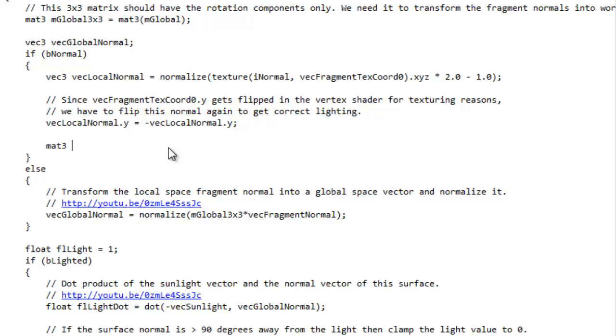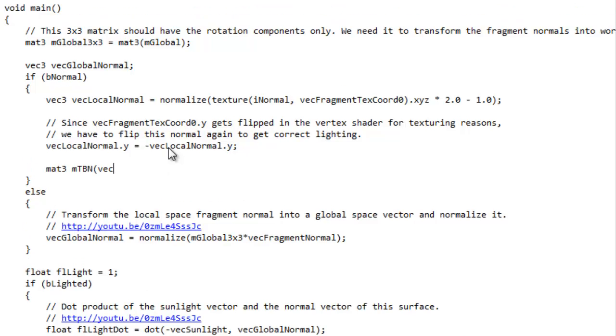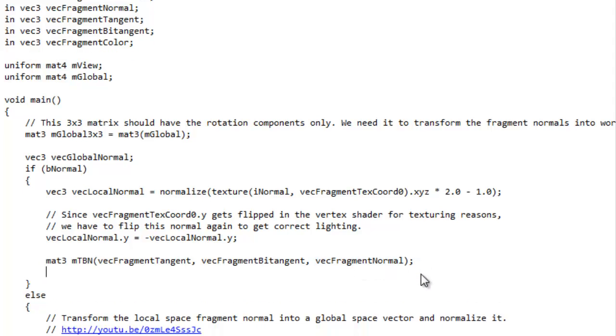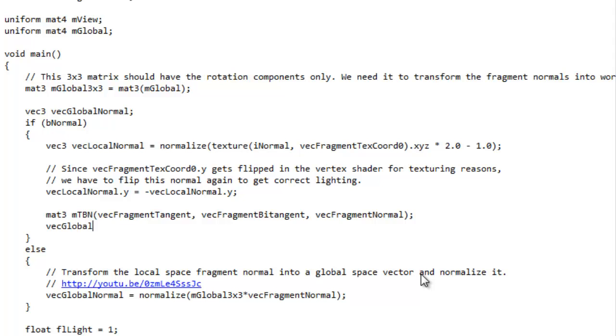So let's make a matrix. We're going to call it TBN, that is the tangent bi-tangent normal matrix. And we are going to pass our vectors into it. I forget what my vectors are called, so I'm going to scroll up. Here we go. So we're going to go to fragment tangent, fragment bi-tangent, and fragment normal. So tangent is X, bi-tangent is Y, and the normal is Z.